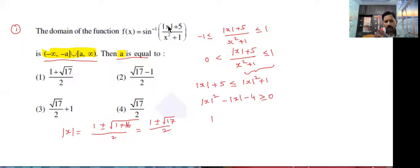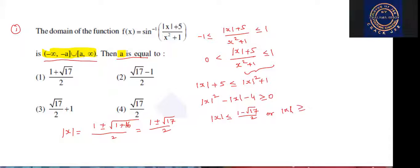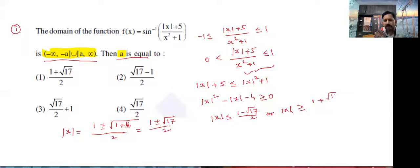So that means mod x value less than or equal to 1 minus root 17 by 2 or greater than or equal to 1 plus root 17 by 2. So 1 minus root 17 by 2 this is complete negative but mod x is not negative. So finally this value is not exists. So mod x is greater than or equal to 1 plus root 17 by 2.